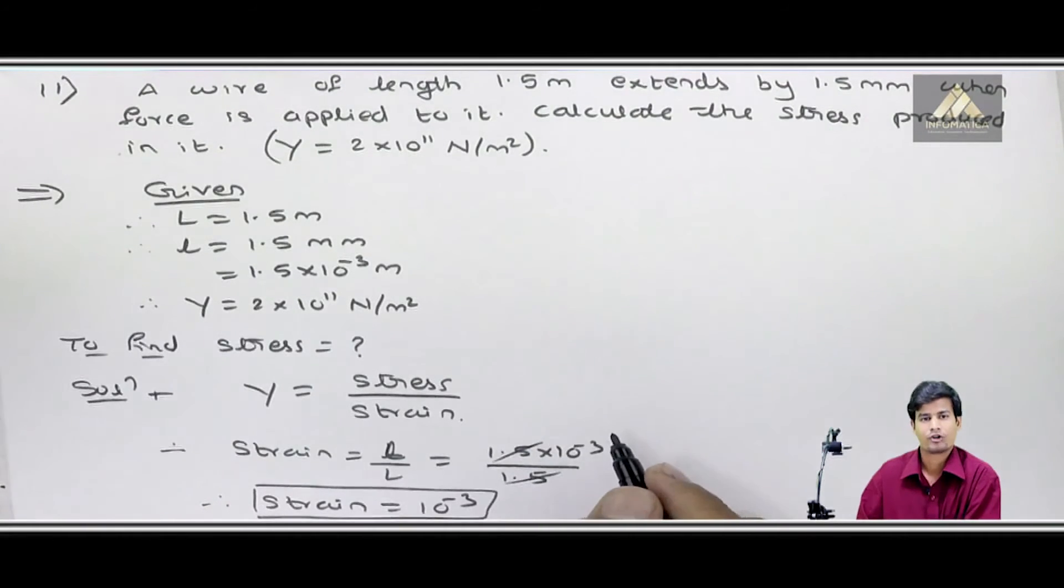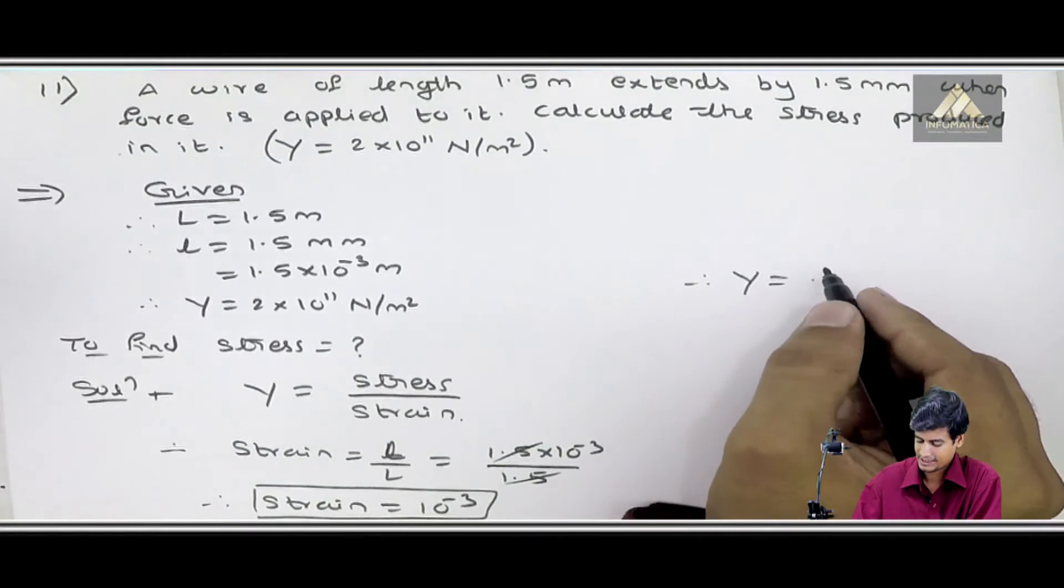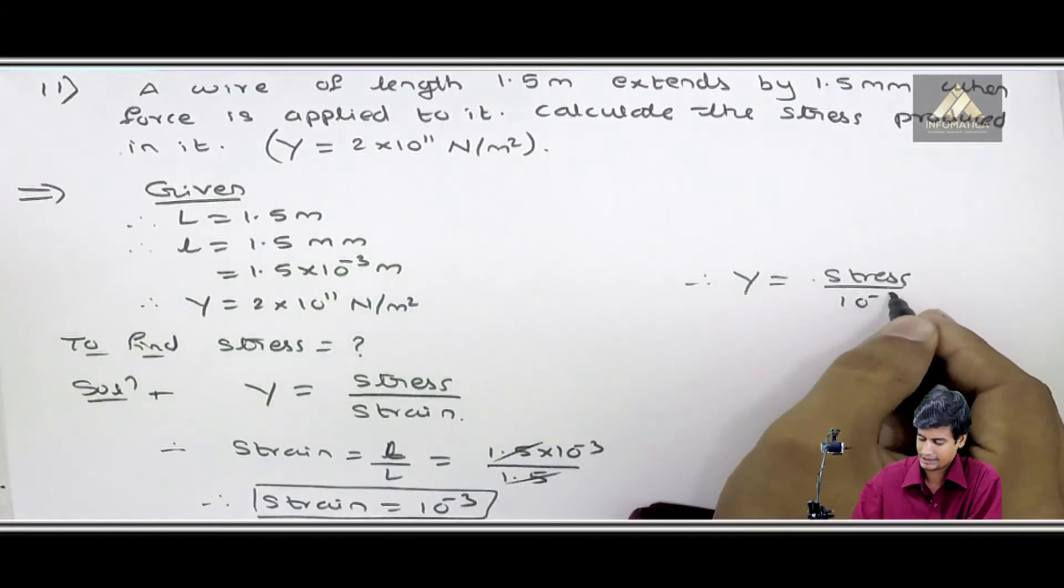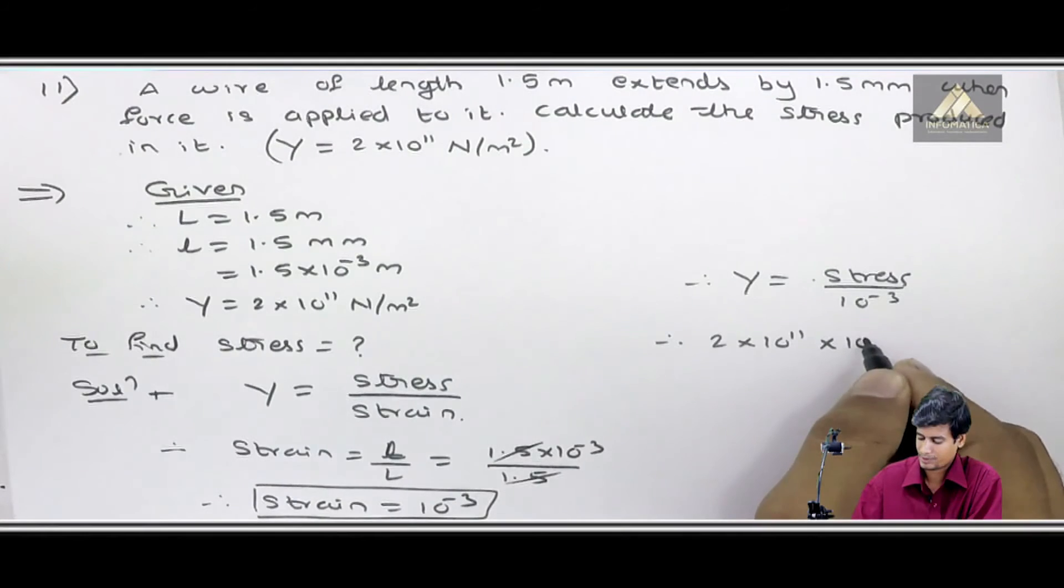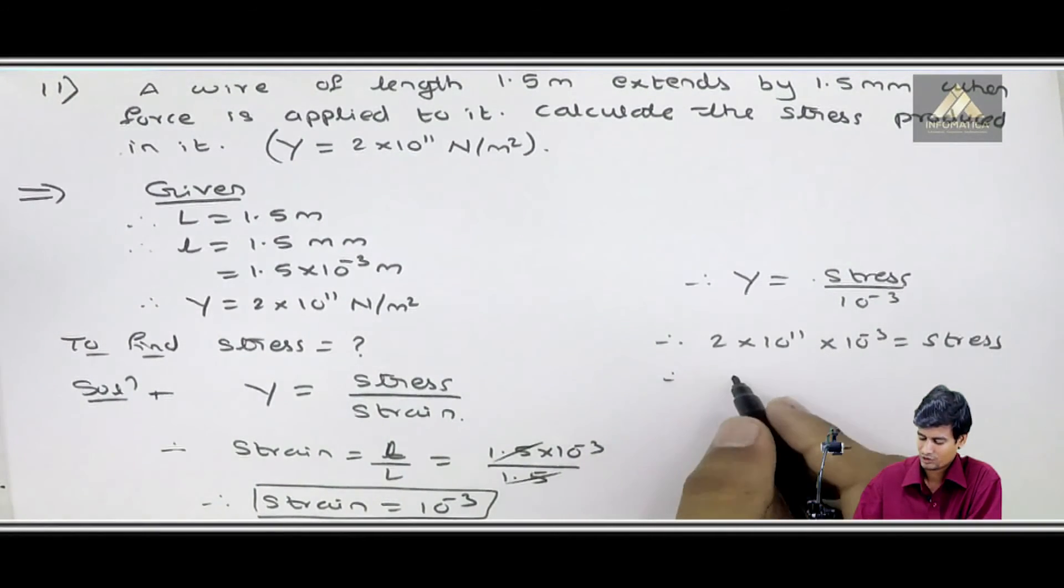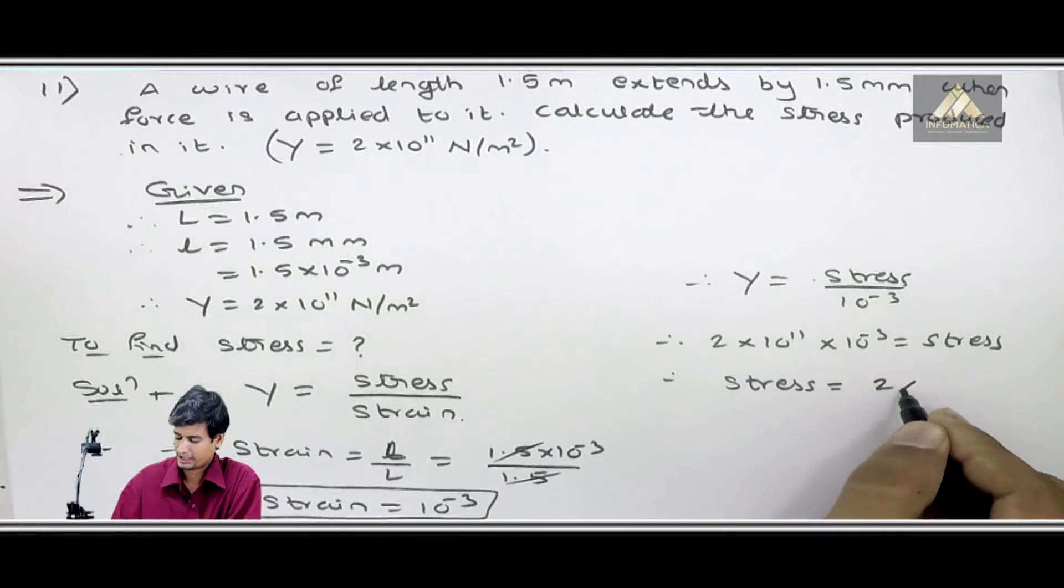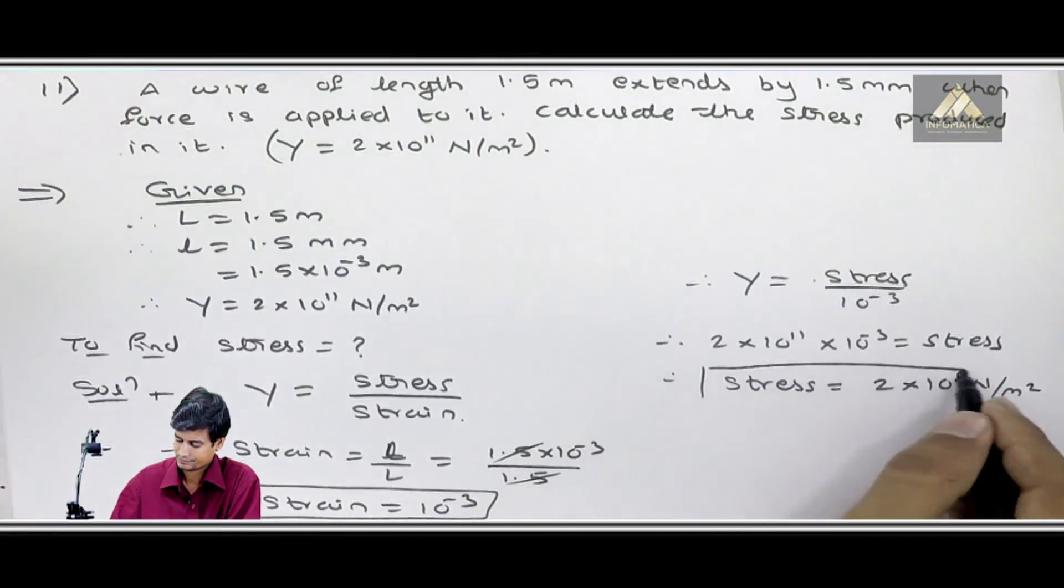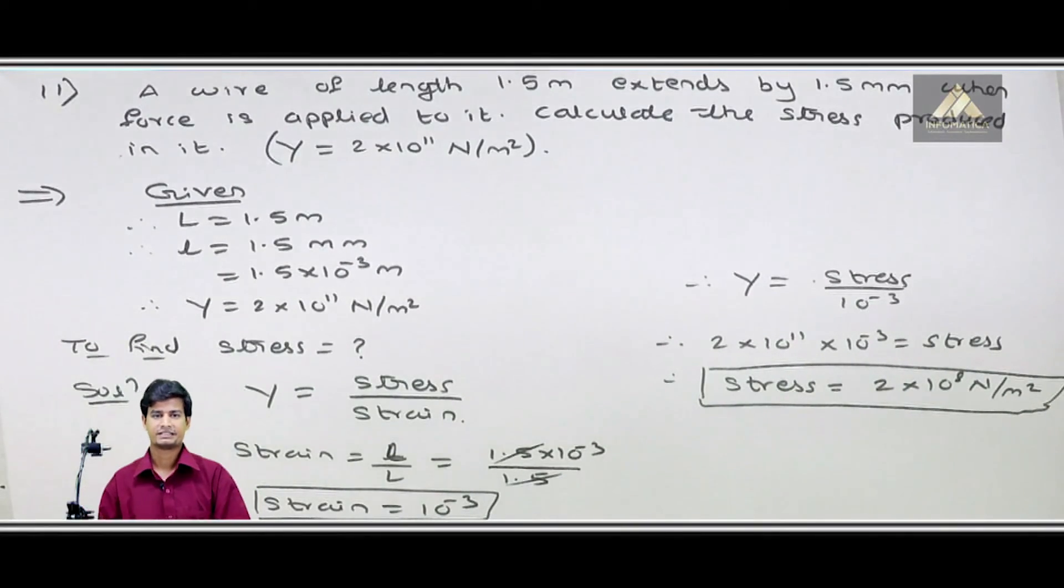Now I substitute this in our formula. Y equals stress upon strain. Stress we need to find, strain is 10⁻³. Young's modulus given is 2×10¹¹, so 2×10¹¹ × 10⁻³ equals stress. Cross multiplying, stress equals 2×10⁸ newton per meter square. That's the final answer.